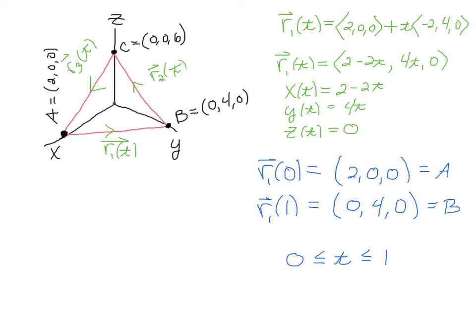And if I plug in 1, that should finish things off here at B. So if I plug in 1, if I make t = 1, I have 2 - 2 which is 0, 4 times 1 is 4, and Z is 0, so that's still going to give me ⟨0, 4, 0⟩, and that is the point B. So at t = 0 we're at A, and at t = 1 we're at B, so we would say that t is between 0 and 1.